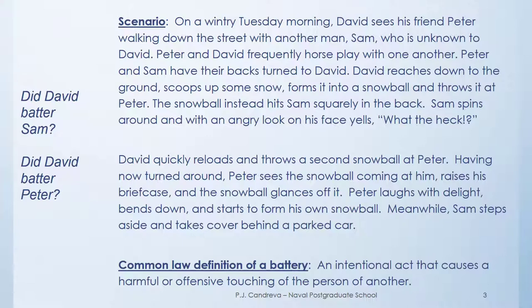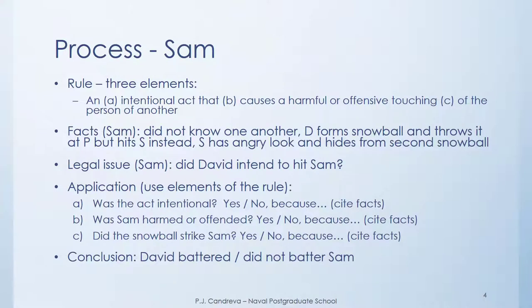The question is: did David batter Sam, and did David batter Peter? The common law definition of battery is an intentional act that causes a harmful or offensive touching of the person of another. So now we have a set of facts and a rule. This rule has three elements — something that needs to be proven for the rule to govern. The three elements are: one, the person performed an intentional act; two, that act causes a harmful or offensive touching; and three, the harmful or offensive touching must be to the person of another — you can't batter yourself or an inanimate object.